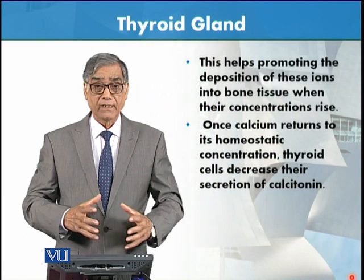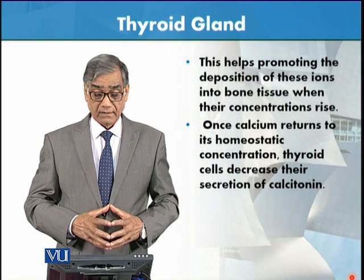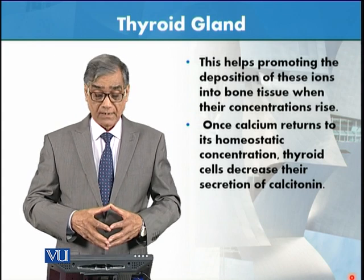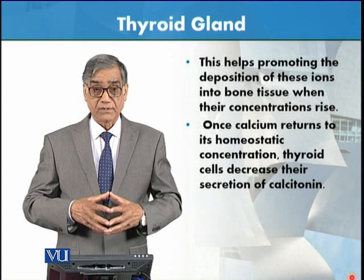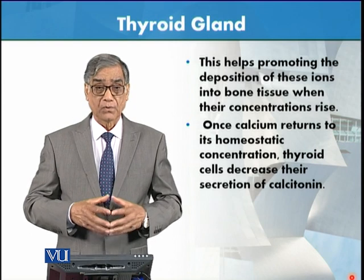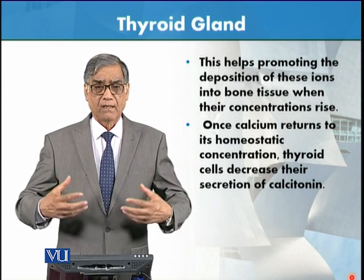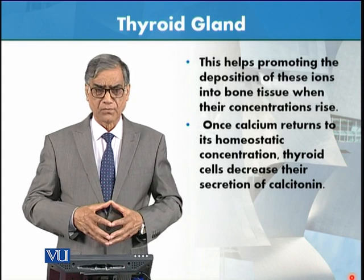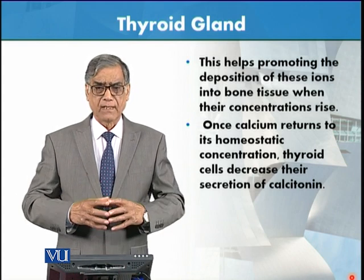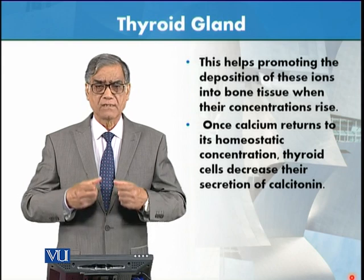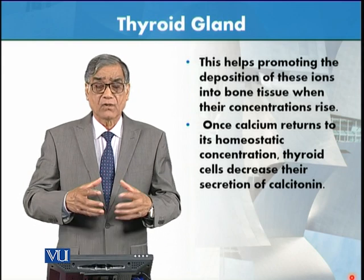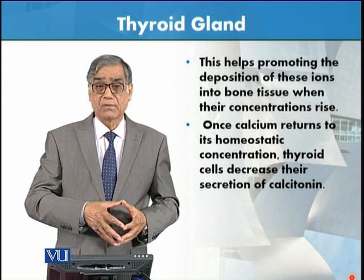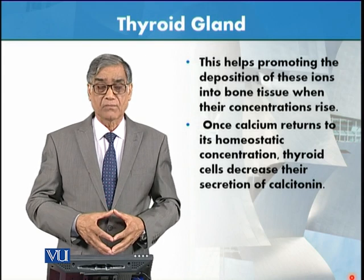Now calcitonin helps promote the deposition of calcium ions into bone tissues when their concentrations rise. So as we take calcium-containing substances as food, calcium comes into the blood, and in the presence of calcitonin it causes the absorption of calcium ions into the bones.